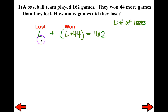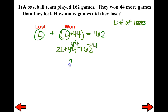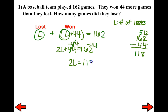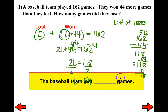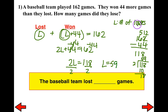Combining like terms gives 2L + 44 = 162. Get rid of the constant by subtracting 44 from both sides: 2L = 118. Simply divide both sides by 2: L = 59. L represents the number of losses, so the baseball team lost 59 games.